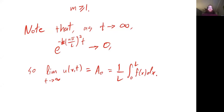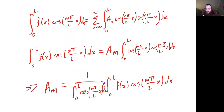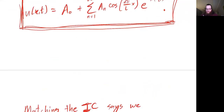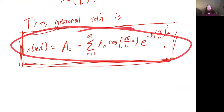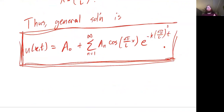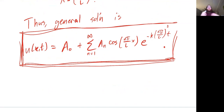So that's the heat equation with insulated boundaries. The only major difference was we changed the form of our solution to be in terms of cosine functions, but the analysis is pretty much the same — we have methods to compute what these constants are, and then we have our solution explicitly.